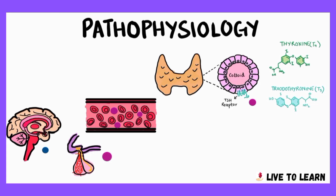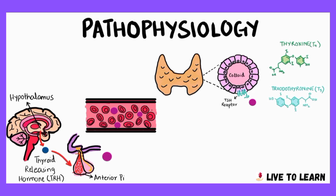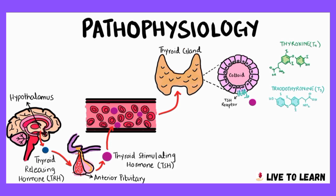Before discussing the pathophysiology of Graves' disease, let's have a quick recap of the anatomy and physiology of the thyroid gland and its hormones, as well as the hypothalamic-pituitary-thyroid axis. The hypothalamus in the brain releases thyroid releasing hormone, or TRH, which acts on the anterior pituitary and causes it to release thyroid stimulating hormone, or TSH. TSH is carried by the bloodstream to the thyroid gland where it stimulates the follicles to produce thyroid hormones.